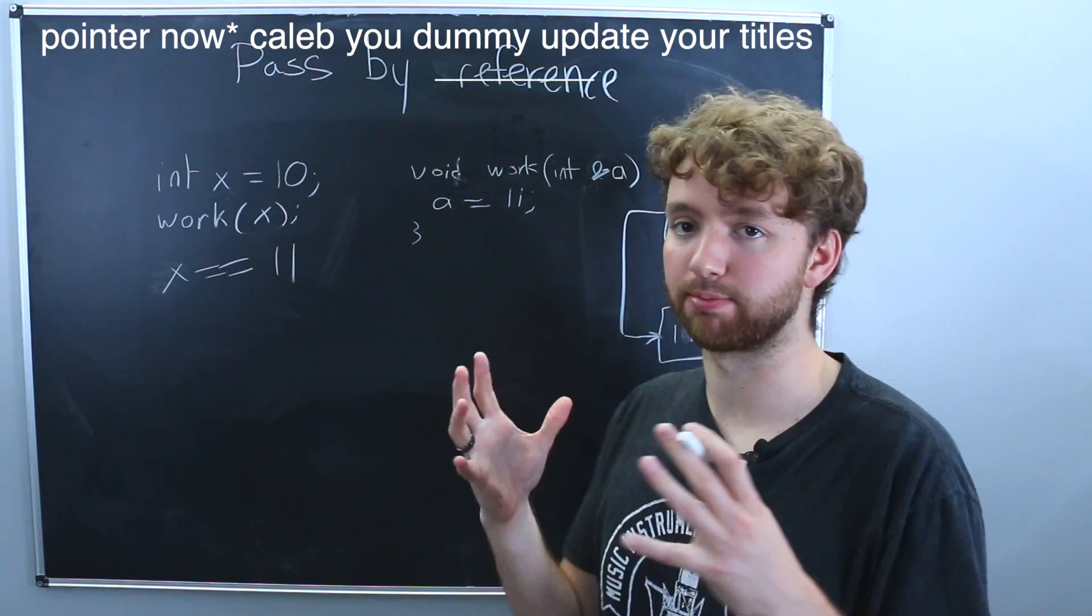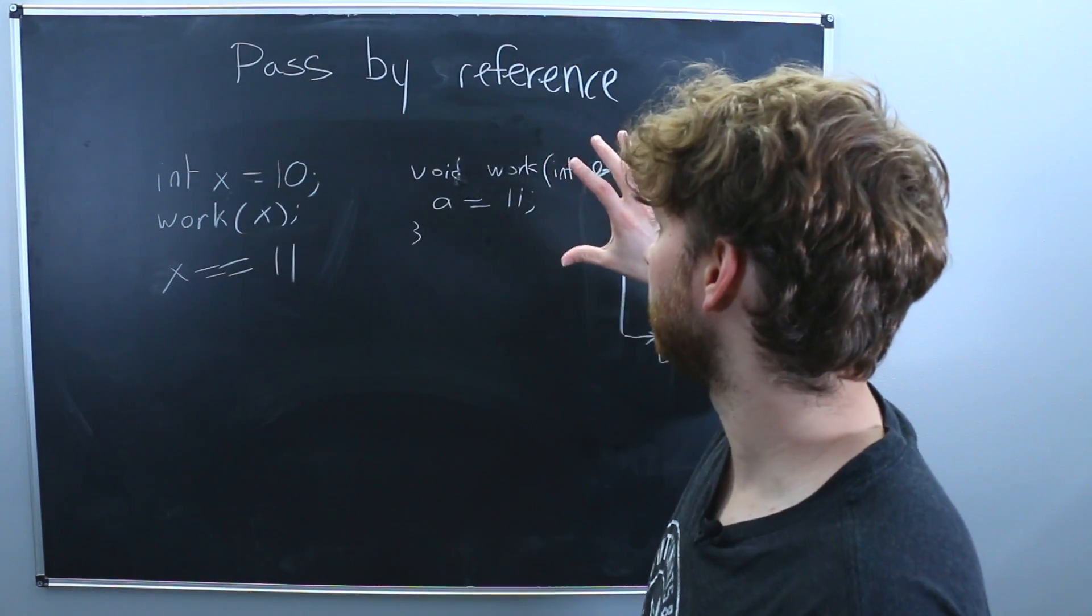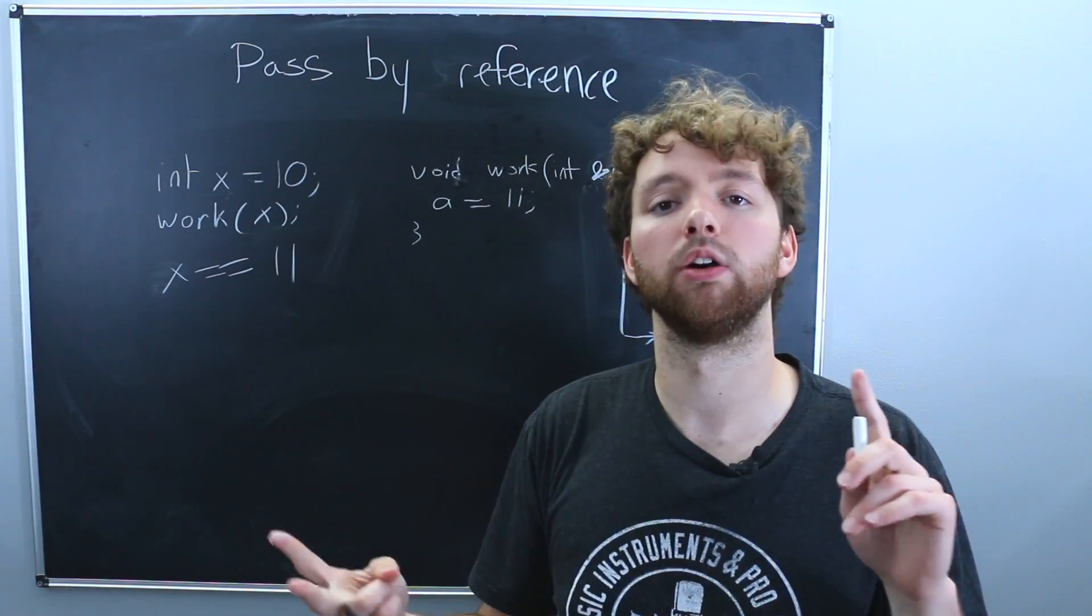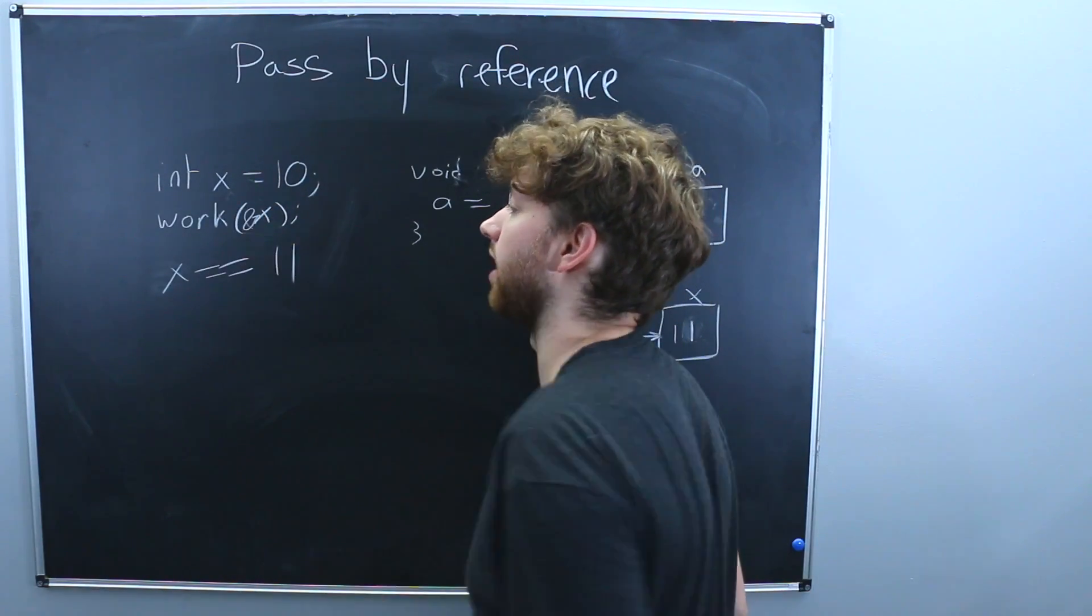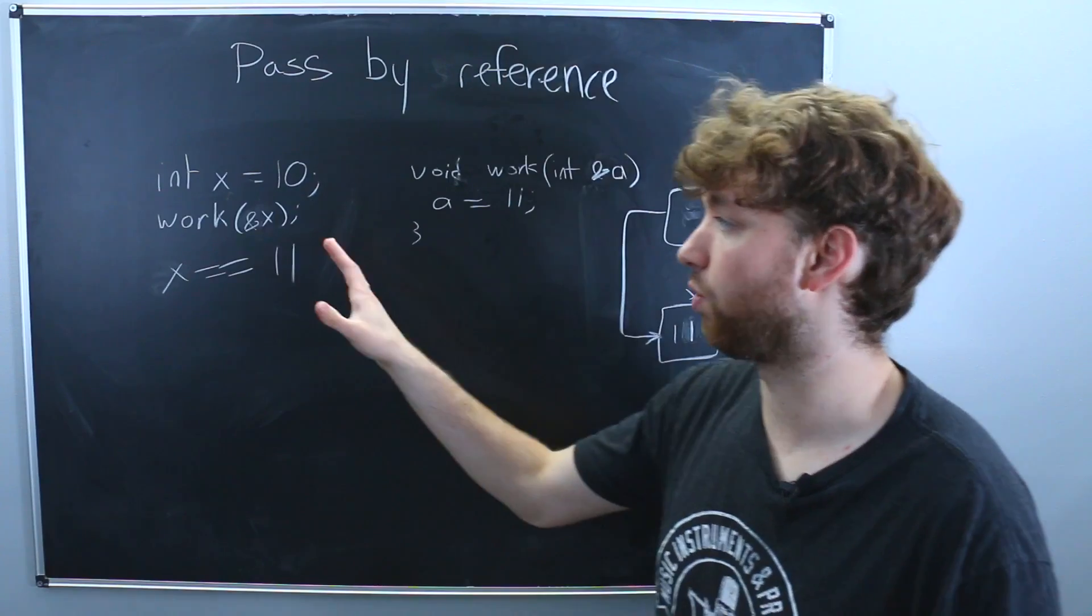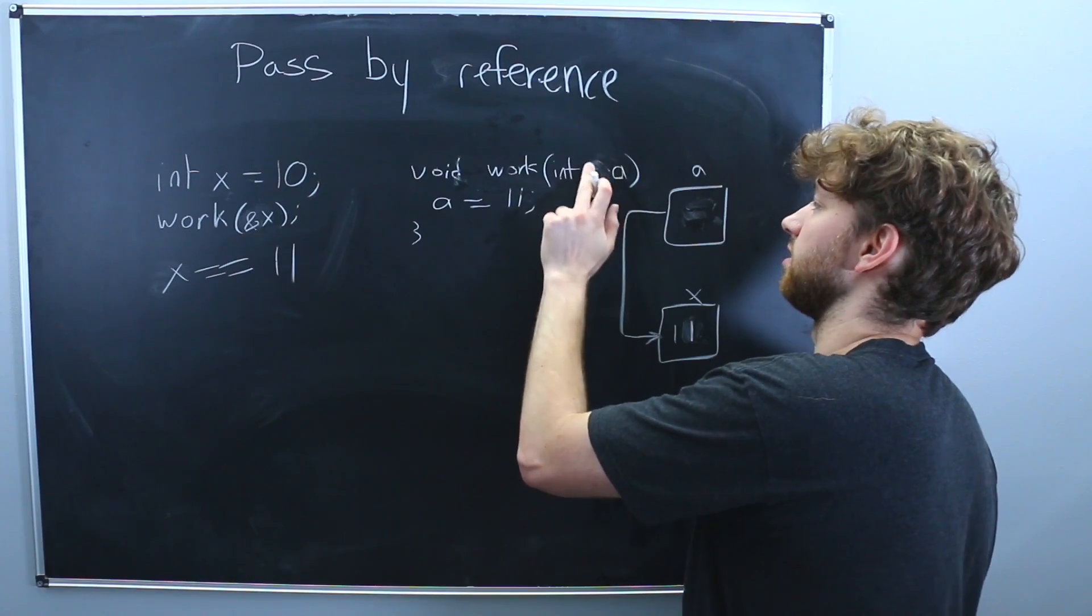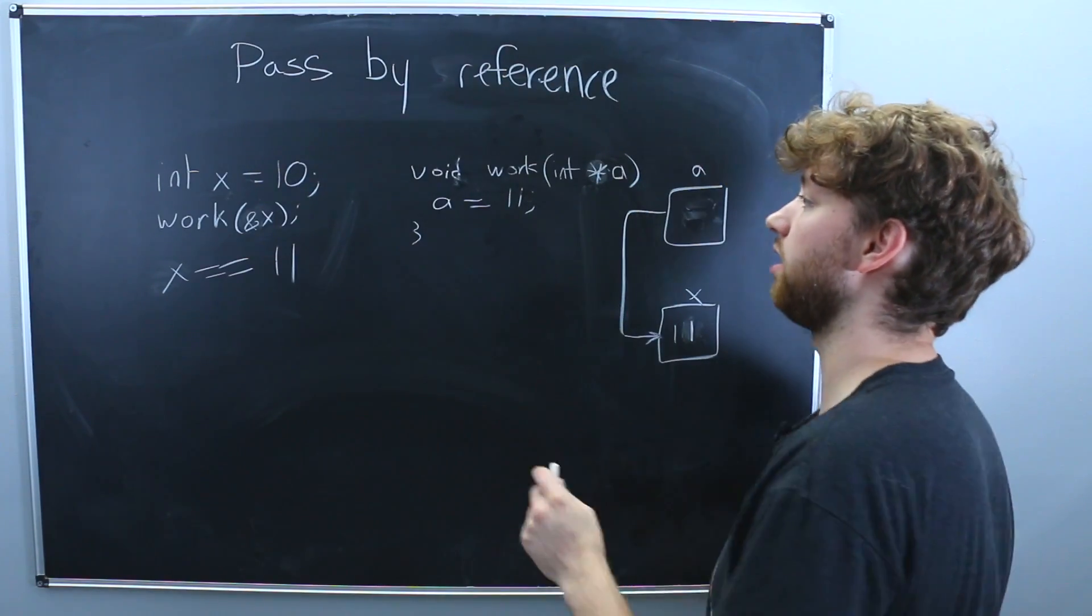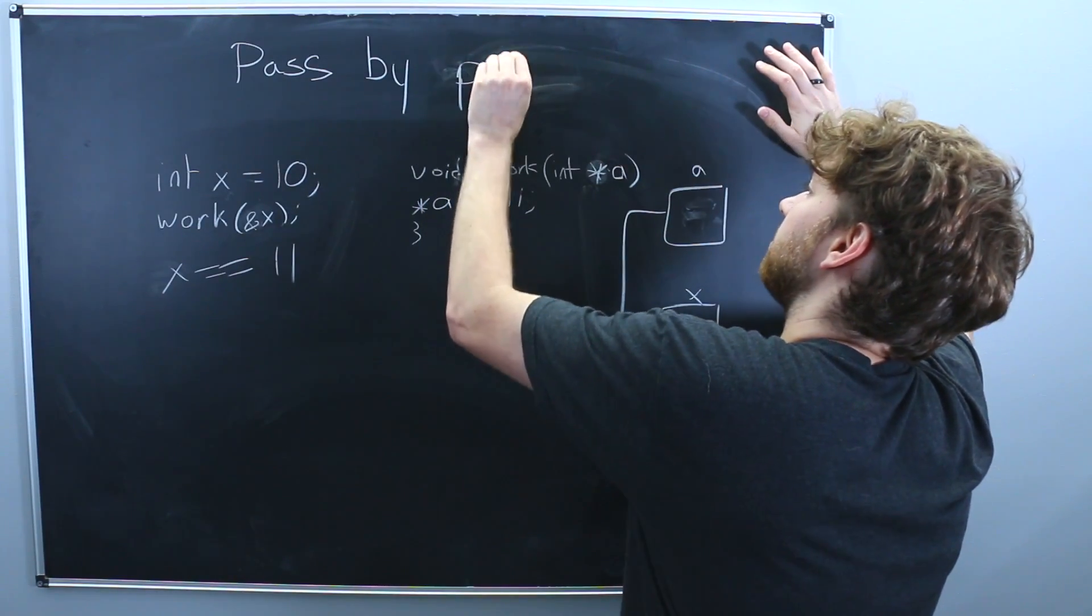So the difference between pass by pointer and reference is on the calling side, you actually have to do something different. Because if your function takes a pointer, you need to pass in either a pointer variable or an address. So instead of passing in x, we can pass in the address of x using the ampersand. So we know that this function is working with pointers. There's no question about it over on this side. On this side over here, we actually define this as a pointer using an asterisk. Then anytime we want to work with that data itself, we can dereference it using that asterisk again. So this is how passing by pointer works.